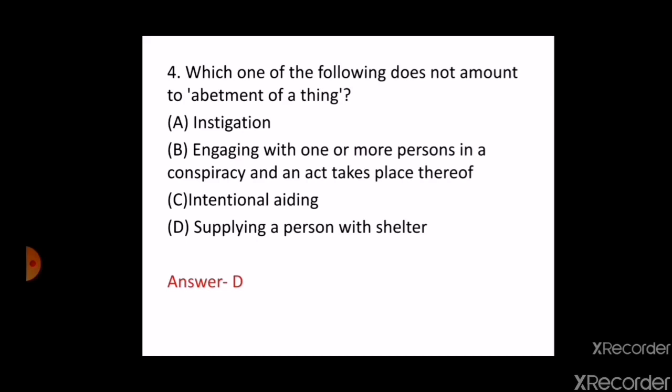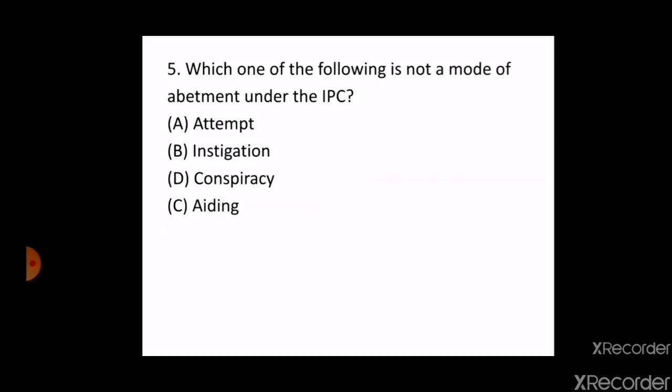The next question is: which one of the following is NOT a mode of abatment under the IPC? A. Attempt, B. Instigation, C. Conspiracy, D. Aiding. The correct answer is A — Attempt.